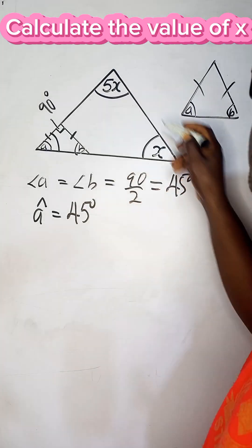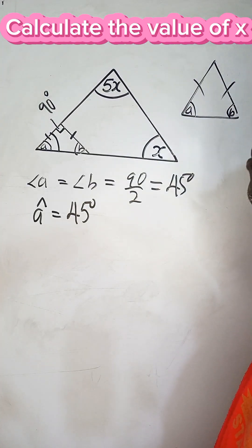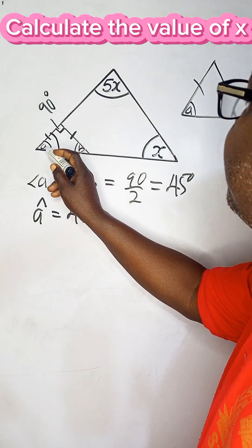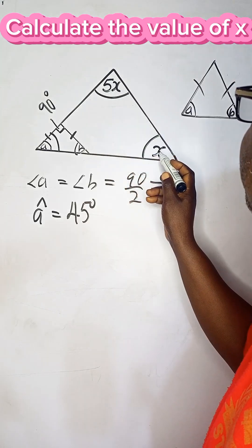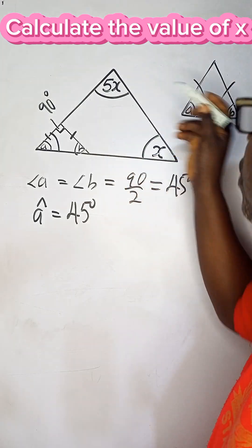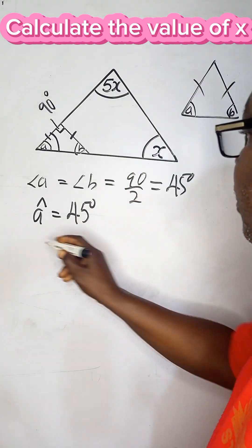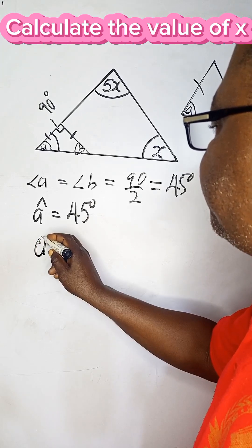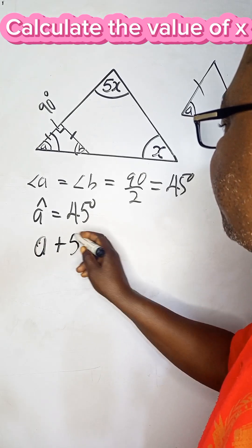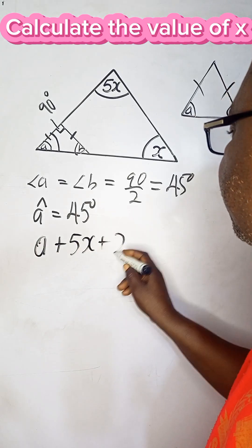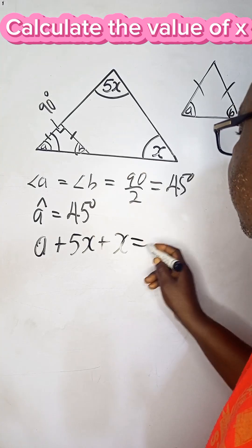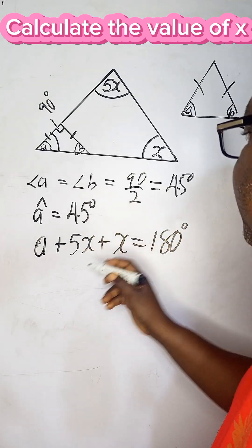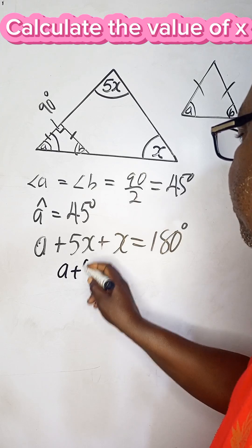The sum of interior angles of any triangle is 180 degrees. So we expect angle a plus angle 5x plus angle x to give us 180 degrees. That means a + 5x + x = 180 degrees, and 5x plus x is 6x, so we have a + 6x = 180 degrees.